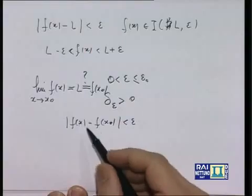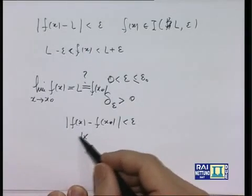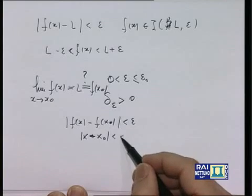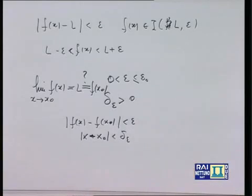Cosa vuol dire che la funzione è continua? Vuol dire che f(x) differisce da f(x₀) meno di ε tutte le volte che x differisce da x₀ meno di un certo δ(ε), con x appartenente ad A. In precedenza abbiamo verificato in buona sostanza che la funzione x + 1 è continua nel punto 1, e avremmo potuto mostrare che è continua in qualsiasi altro punto. Tutte le funzioni polinomiali sono funzioni continue.